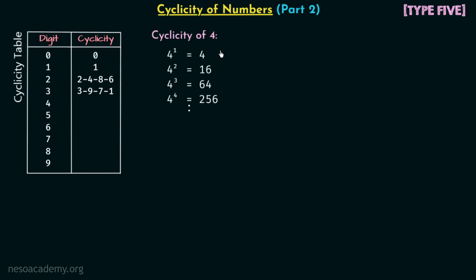To find out the cyclicity of digit 4, we have calculated the various powers of digit 4 and we will now shift our focus on the unit places of these results. For 4 to the power 1 we have 4, so 4 is the digit at the unit place, then we have 6.